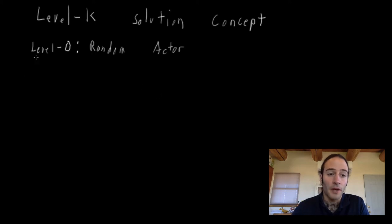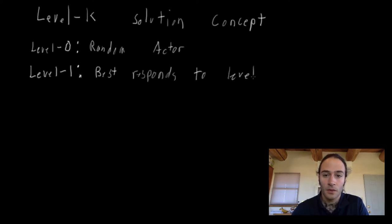But what does a level one player now do? A level one player best responds. So he chooses the best action as if everybody else was level zero. So if a player is level one, it's assuming that everybody else is just a random actor and non-strategic and chooses the best action under that assumption.